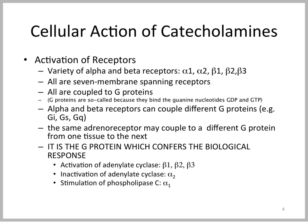So how do catecholamines work at the cell in a molecular fashion? They activate receptors, which can be characterized as alpha and beta receptors in a total of five different types: alpha-1, alpha-2, beta-1, beta-2, and beta-3. All of these are seven membrane-spanning, G-protein-coupled receptors. They can couple to different types of G-proteins — G-inhibitory or stimulatory proteins, or GQ, which connects to phospholipase C and calcium.